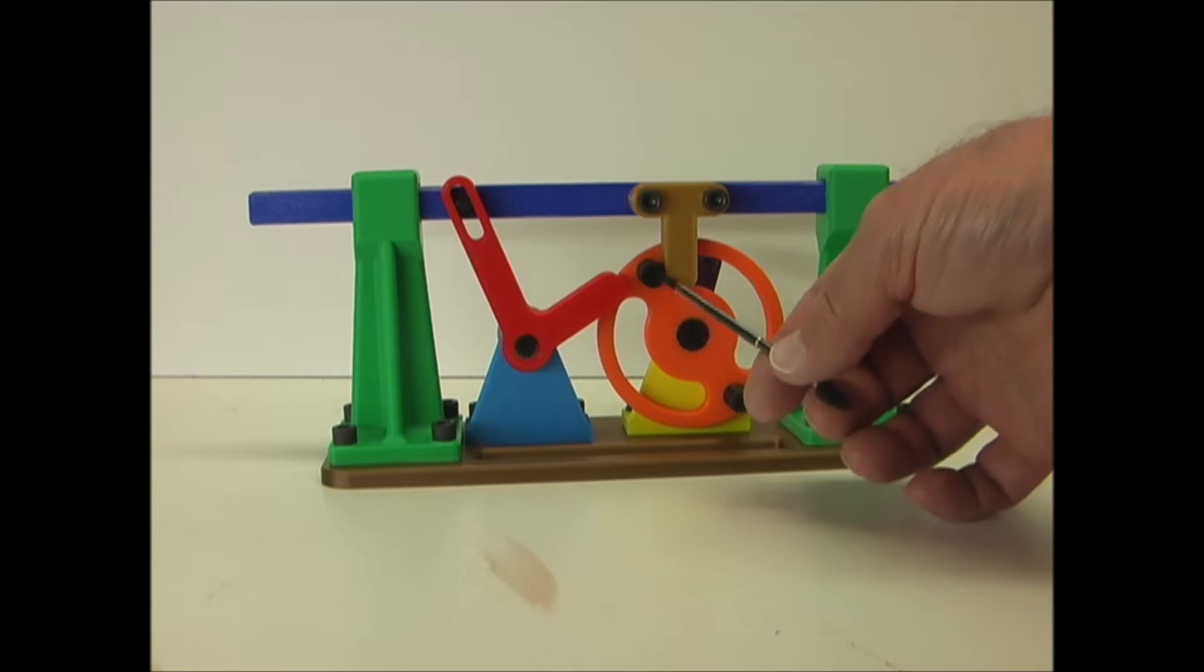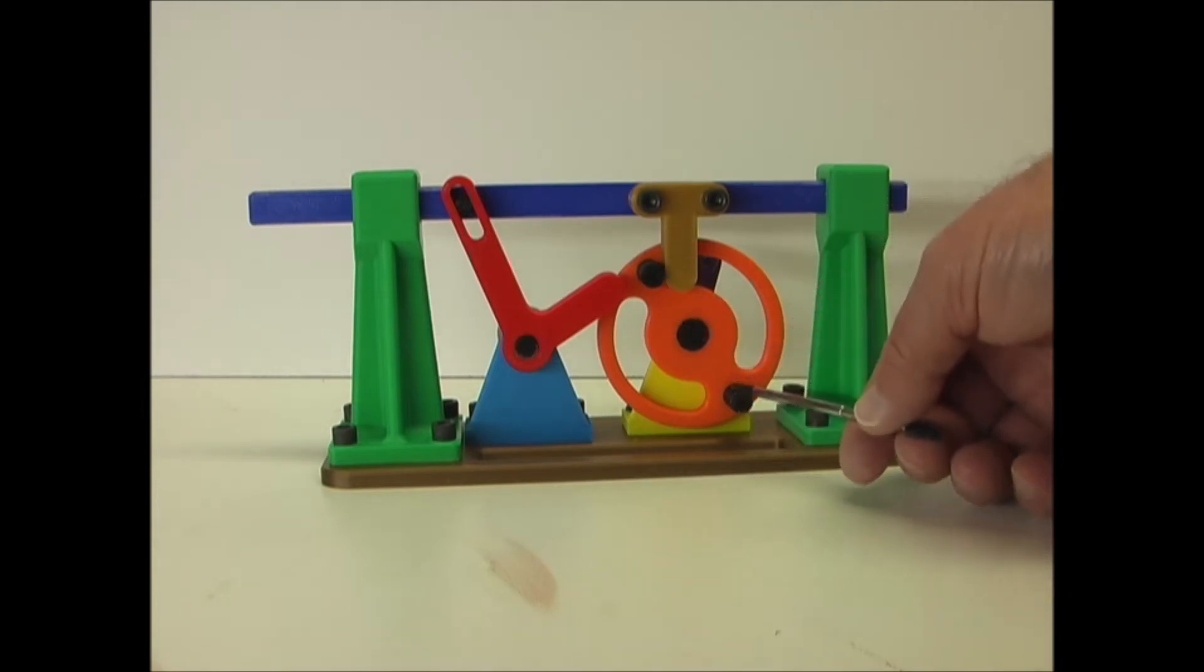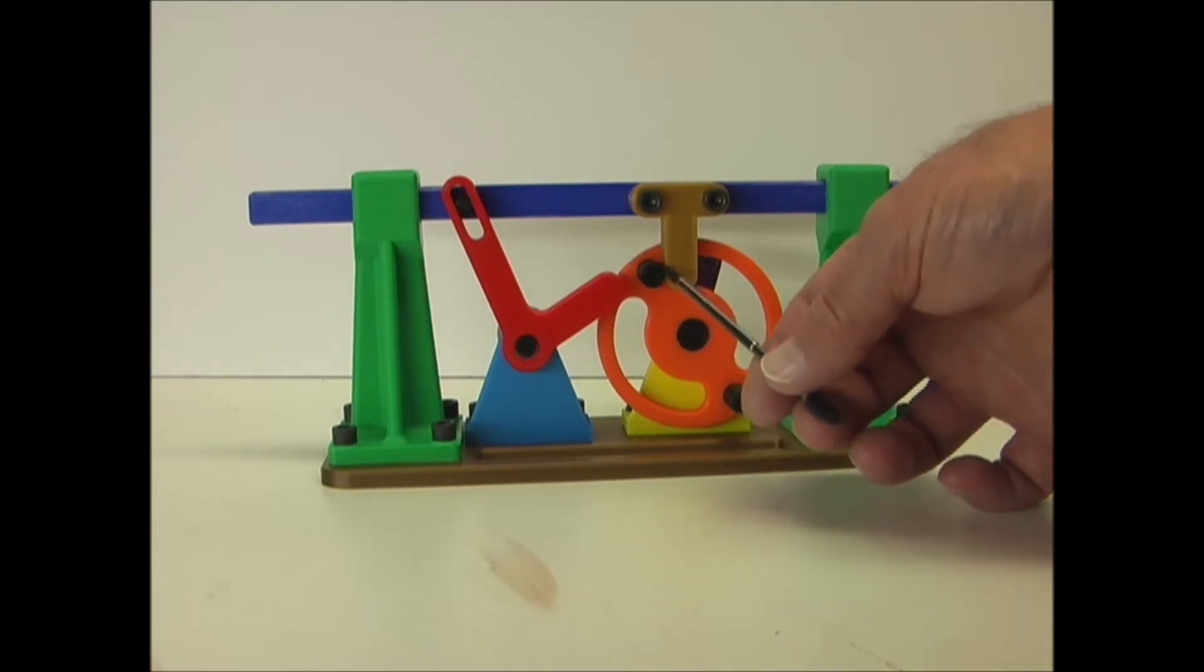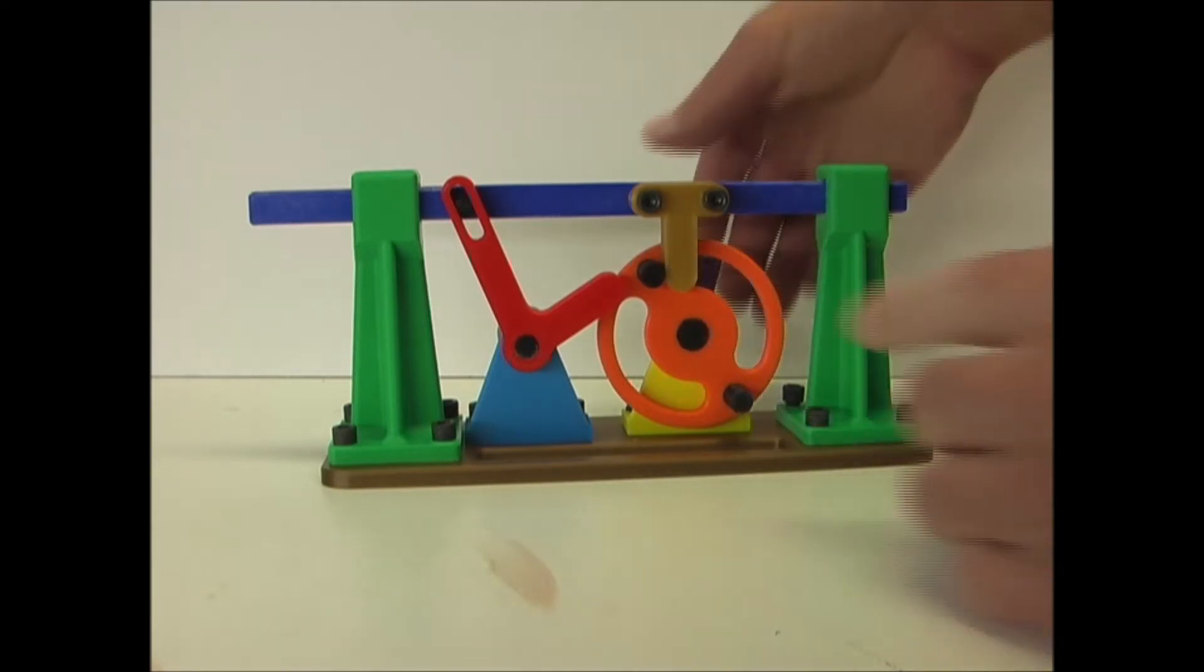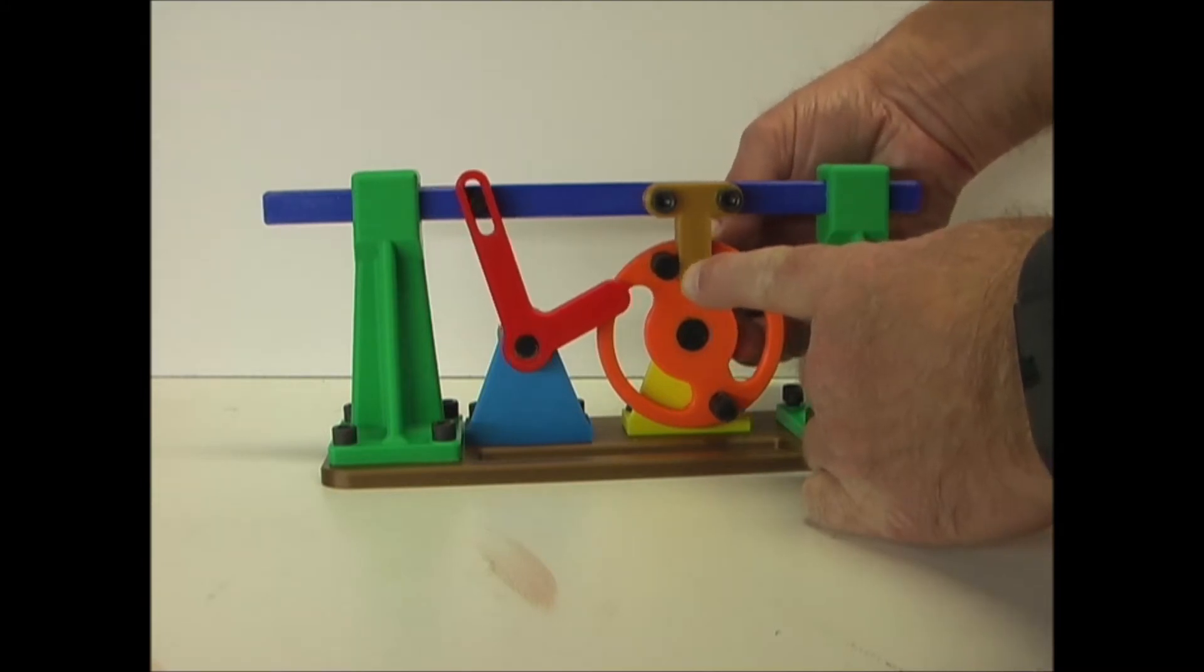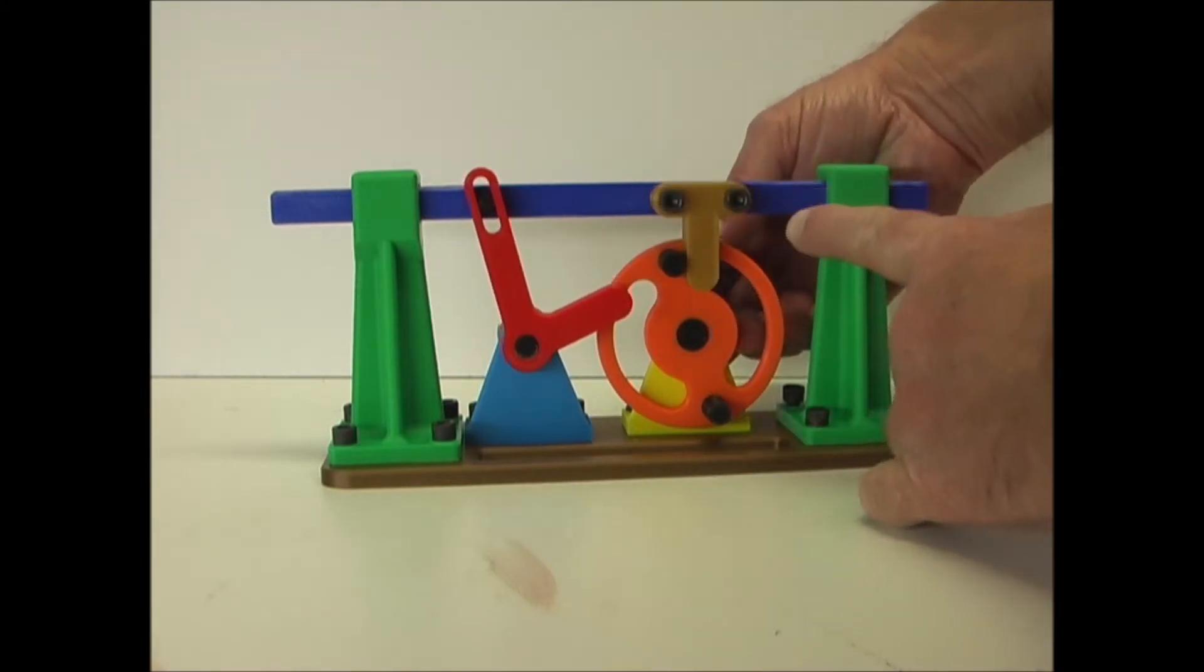This one has a wheel with two pins near the outer edges. As this pin comes around, it's going to hit on this tab. When it pushes on this tab, it moves the slider to the right.